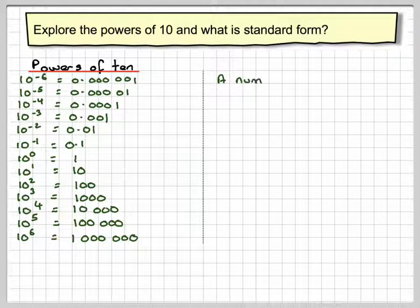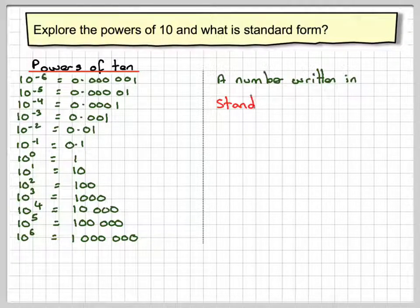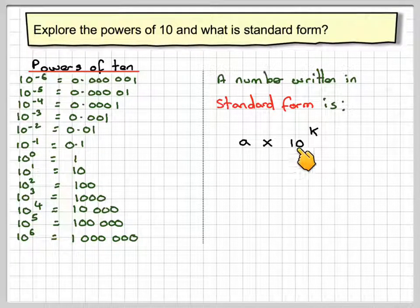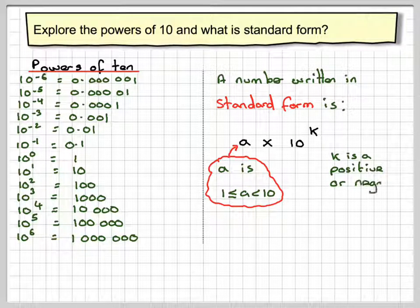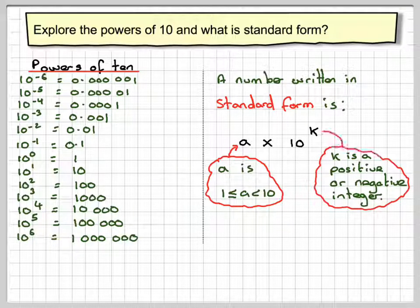What do we mean by standard form? A number written in standard form is a times 10 to the power of k. Now a has certain conditions: a has to be a number between 1 and 10, equal to 1 but not equal to 10. The number k has to be a positive or negative integer, and it can also be 0.